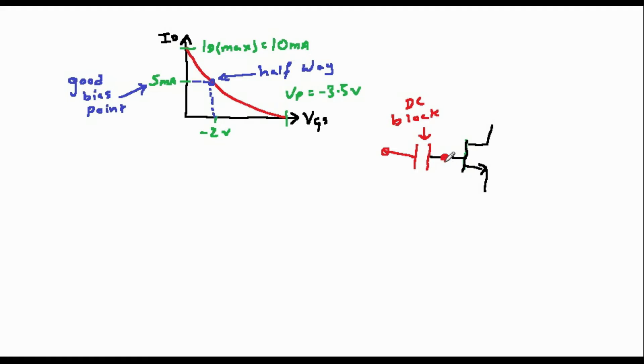So firstly, let's apply the minus 2 volts to the gate using a large, let's say 100k, resistor.